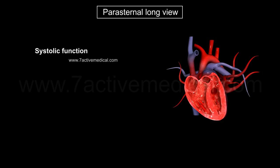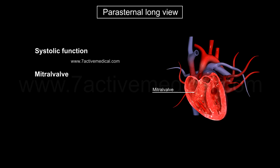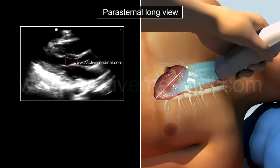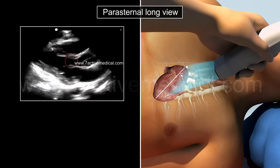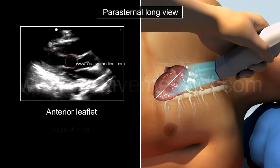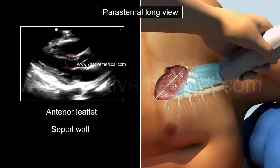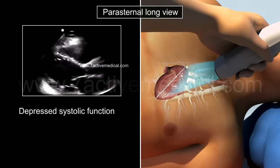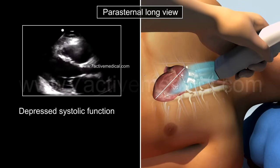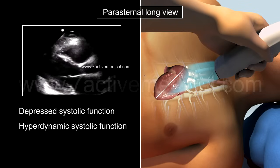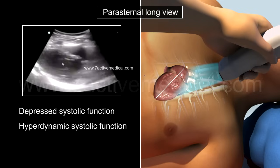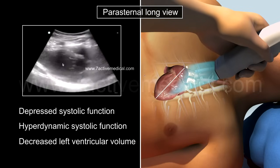Estimating systolic function is done by first identifying the mitral valve with the anterior leaflet and the interventricular septum. In normal systolic function, the anterior leaflet is seen to slap against the septal wall, as shown in the imaging. Depressed systolic function would result in the slowing of the slapping action, while a hyperdynamic systolic function would result in the rapidity of the slapping action, often leading to a decreased left ventricular volume.